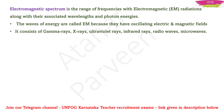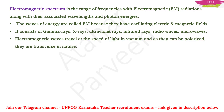The electromagnetic spectrum consists of gamma rays, X-rays, ultraviolet or UV rays, infrared rays, radio waves, and microwaves. Electromagnetic waves travel at the speed of light in vacuum, that is 3 × 10⁸ meters per second.